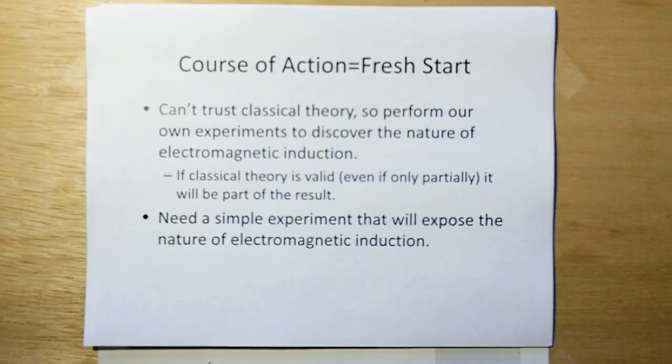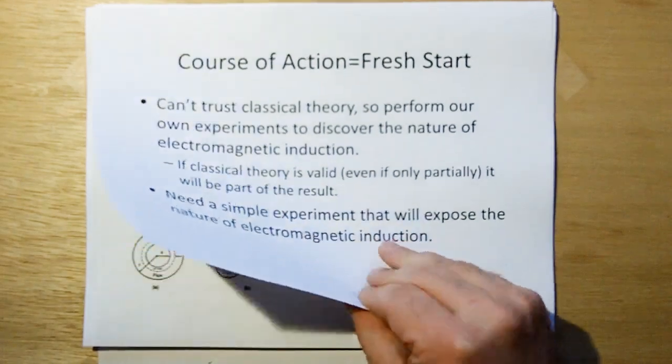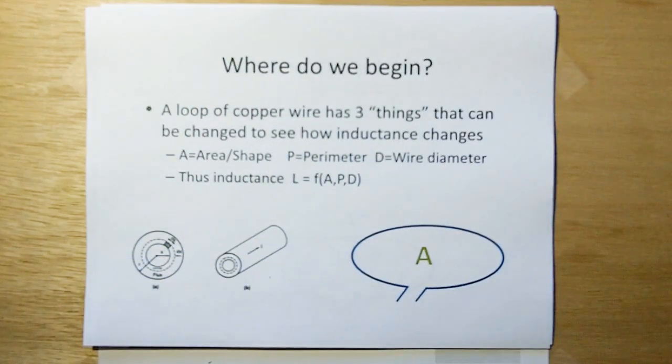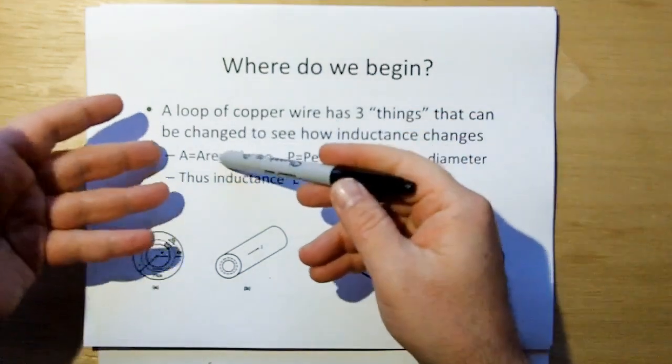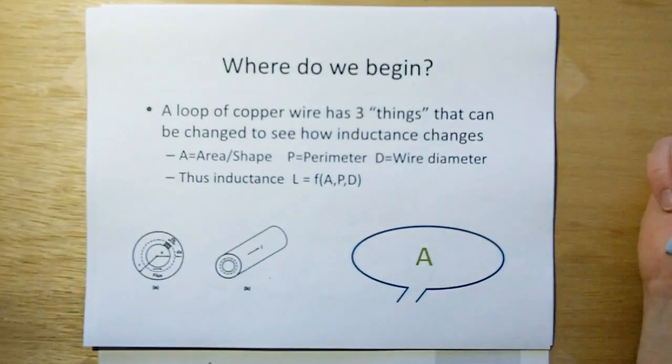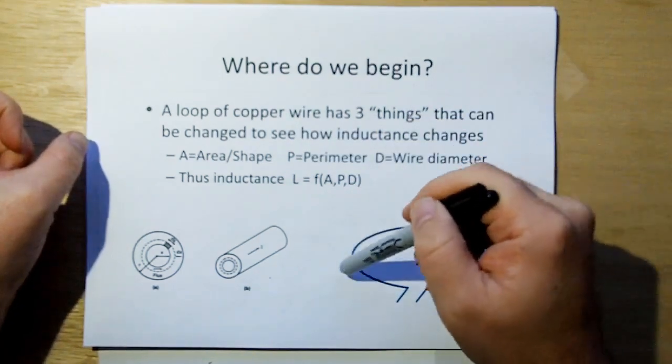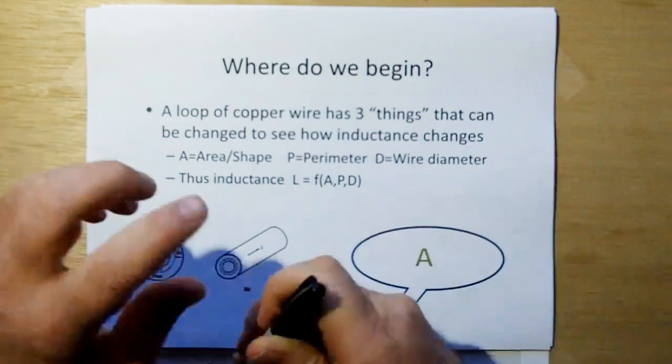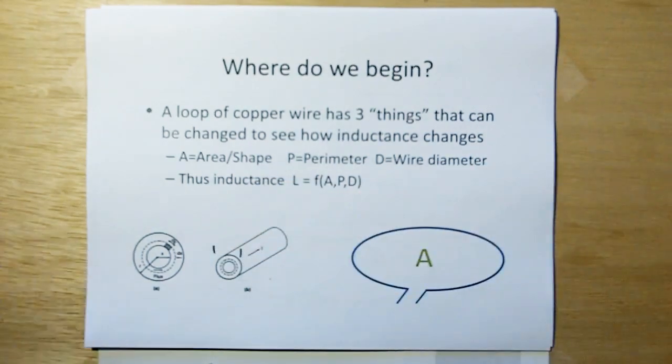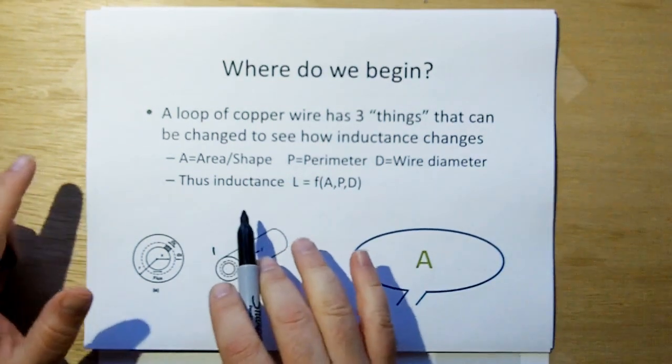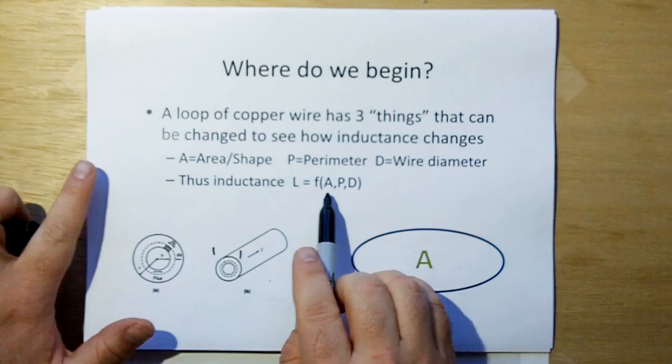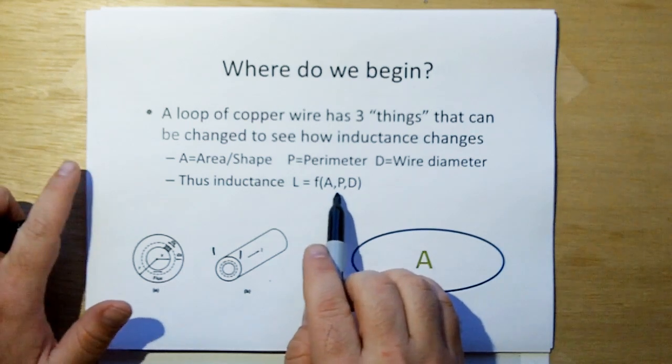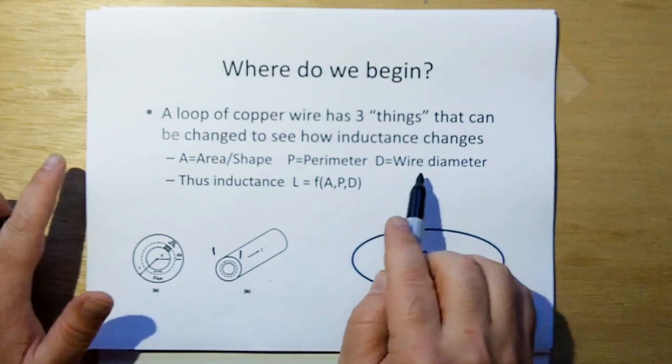So what we need is a simple experiment that will expose the nature of electromagnetic induction. So where do we begin? A loop of wire has three things that can be changed to see how inductance changes. One is the shape, which we've all been calling the area, but the shape and the area are intimately related. One is the perimeter, the length of wire around the loop. And the other is the wire diameter, or wire cross-section. Thus, we should have an equation where inductance is some function of area or shape, perimeter, and wire cross-section or wire diameter.